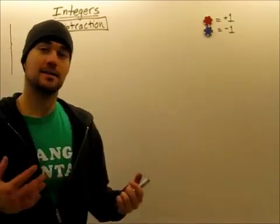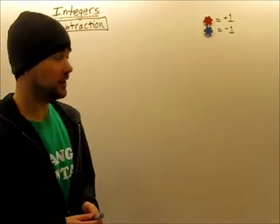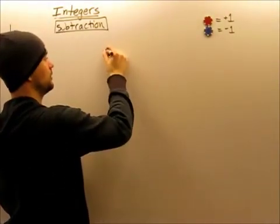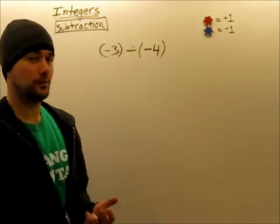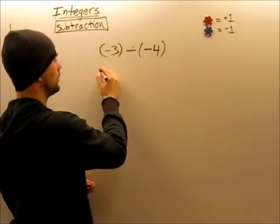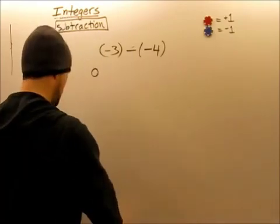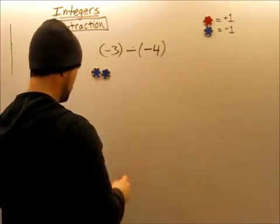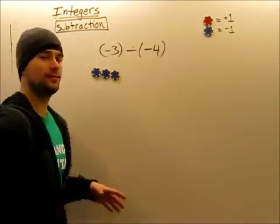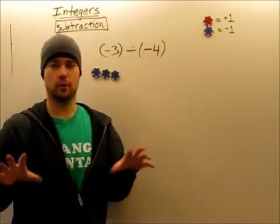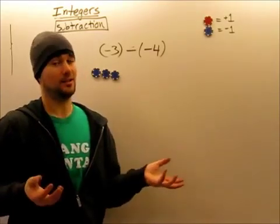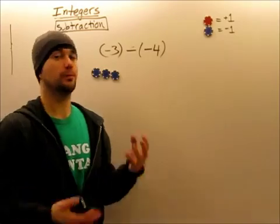Sometimes we're going to be asked to show using counters how to do integer subtraction. We look at the expression that's given to us and figure out what it's going to equal. So if we're going to start with negative three — that's our starting point — we have to subtract a negative four. The problem is we don't have negative four chips to begin with, so it's impossible for us to subtract negative four. We'd have to take away four blue ones, but we don't have four blue ones yet.